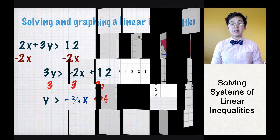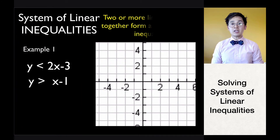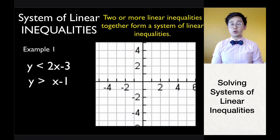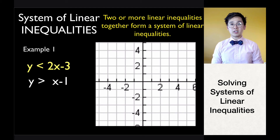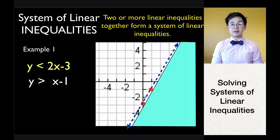Now let's solve a system of linear inequalities. In a system, you will see two or more inequalities. For example: y less than 2x minus 3 and y greater than x minus 1. We need to find the solution set. Start by graphing the first inequality, y less than 2x minus 3 — draw a broken line and shade below the line. This is the first half of our solution.